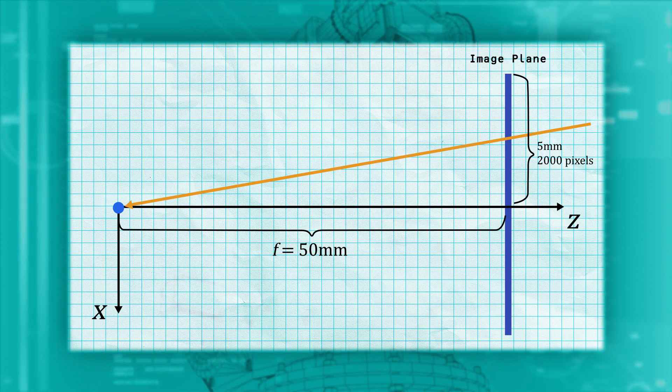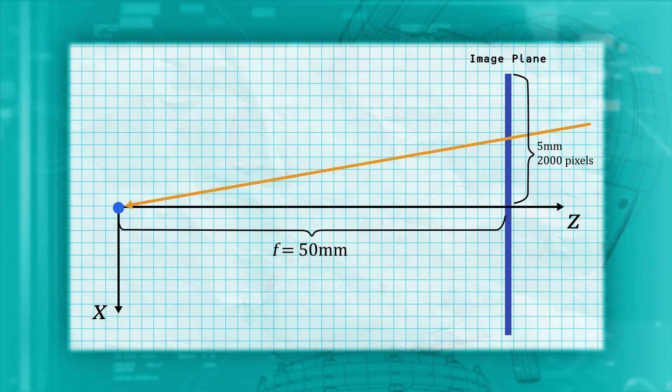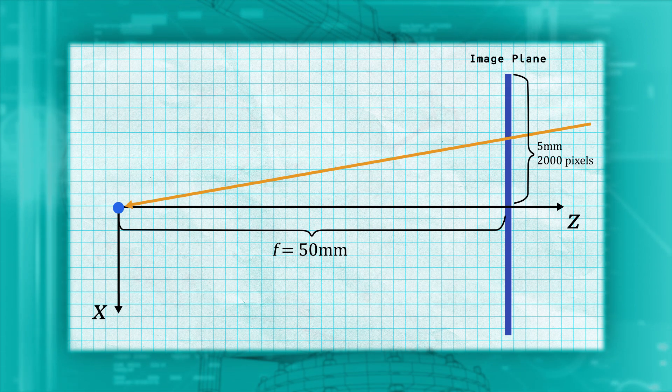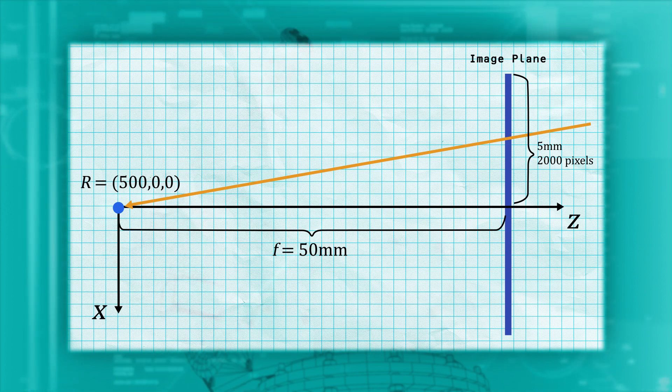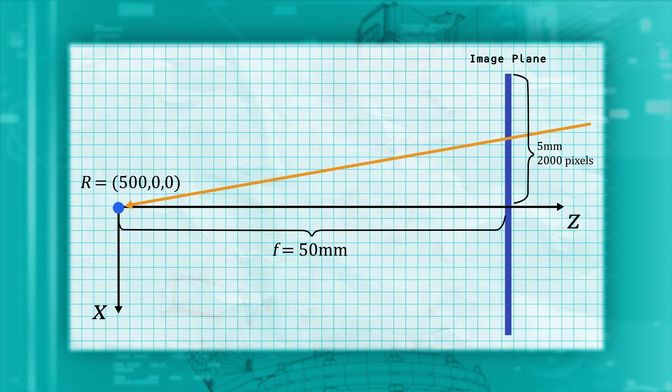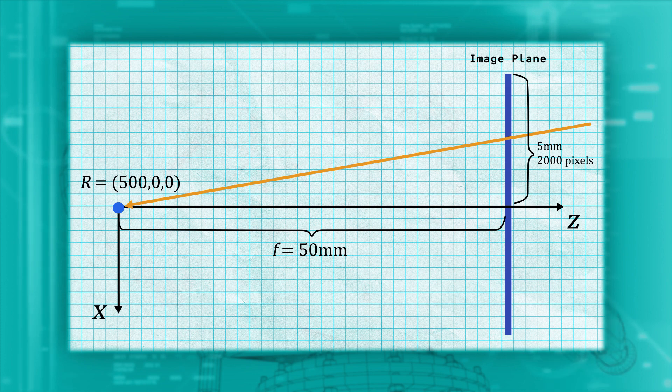We can do the same thing for the right camera. In this case, the camera center isn't at zero, zero, zero anymore since the camera is mounted in a different position. For our example, the cameras are mounted 50 centimeters apart, so the camera center is at X equals 500 millimeters and Z equals zero.